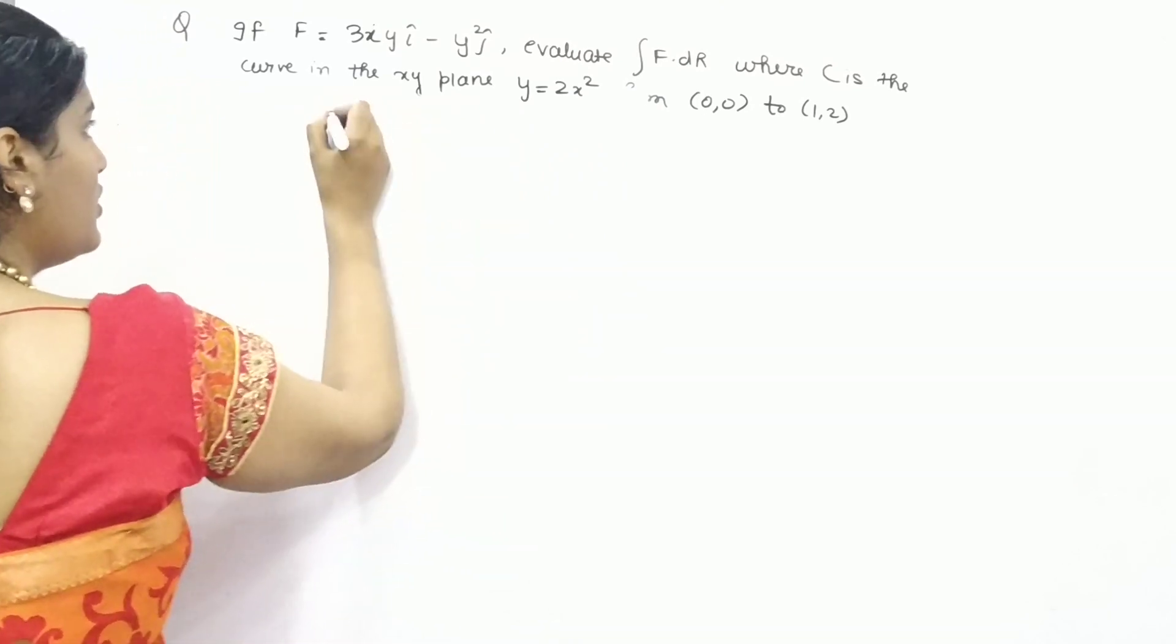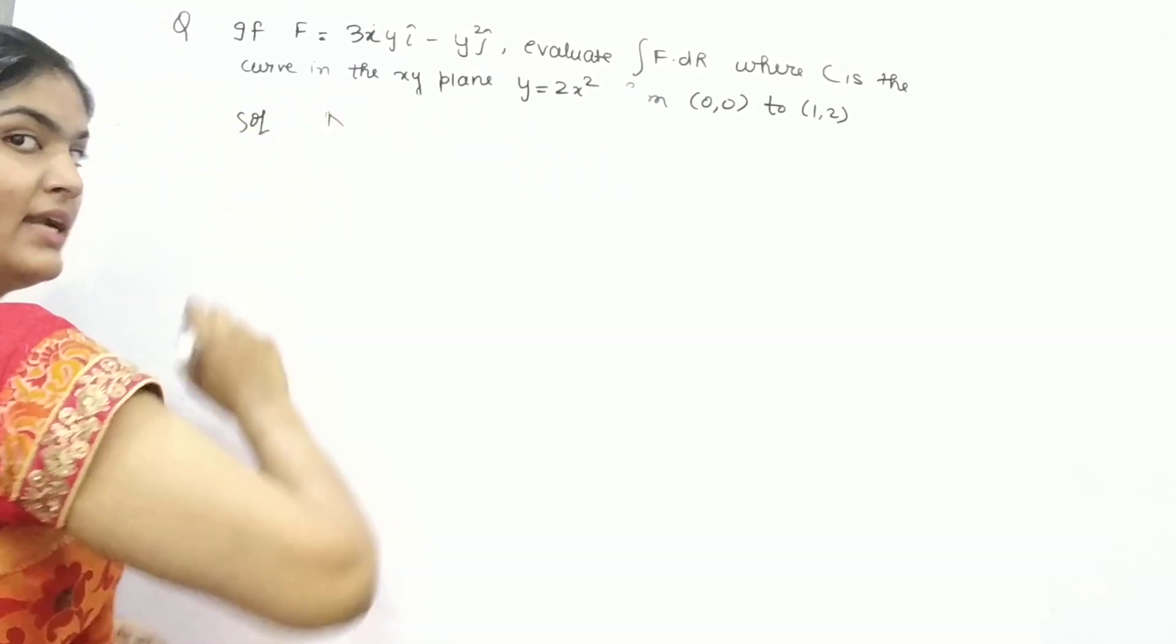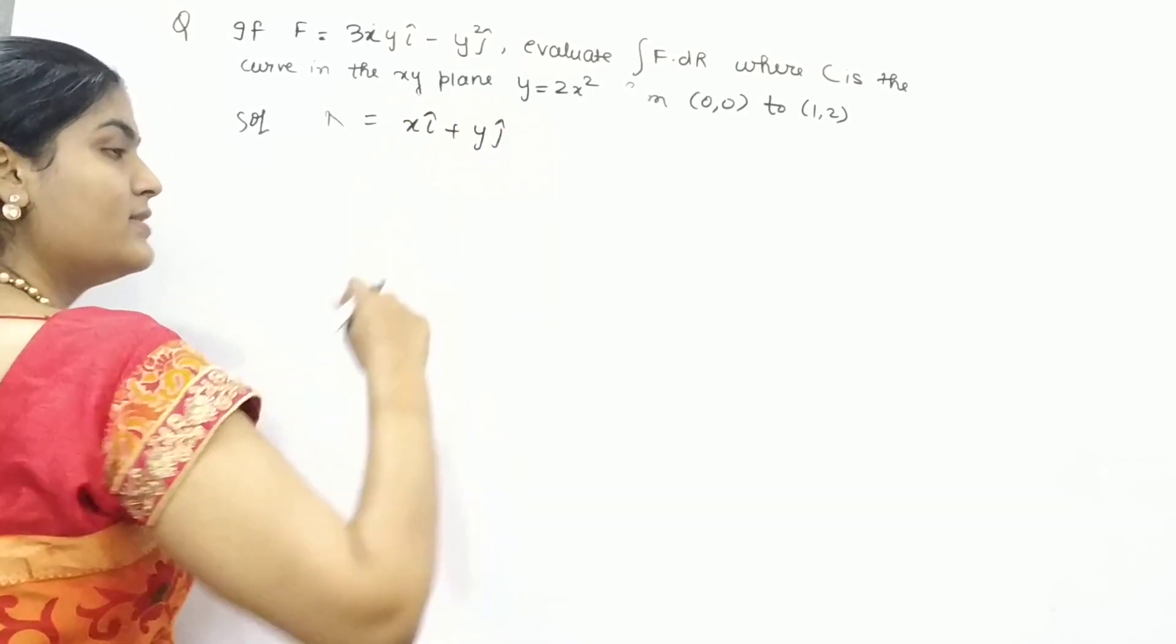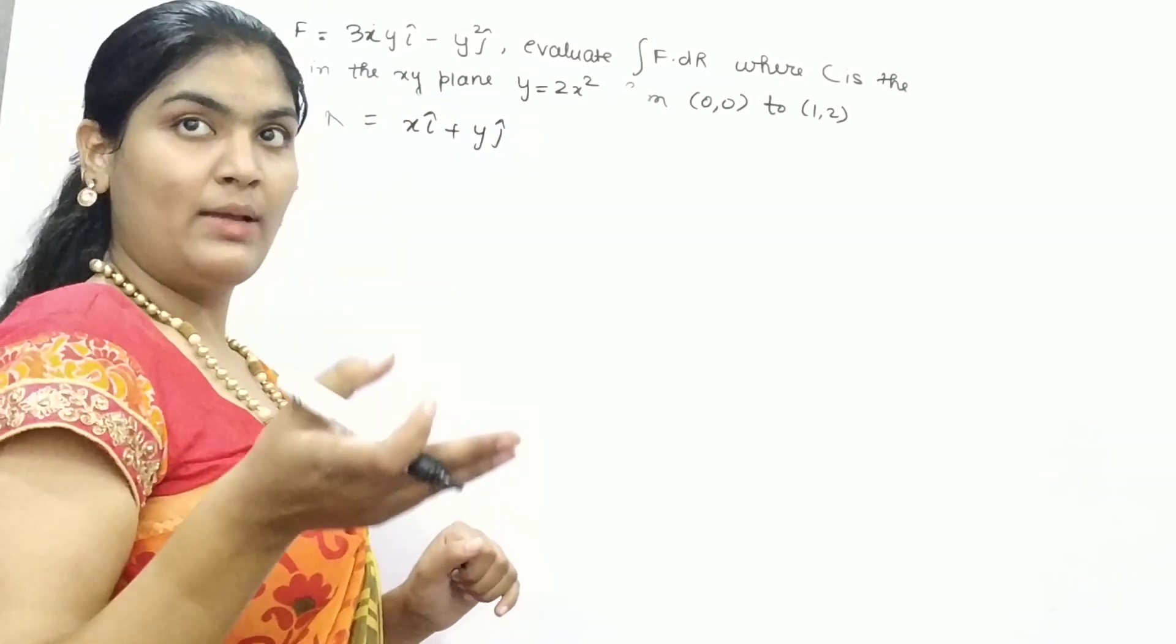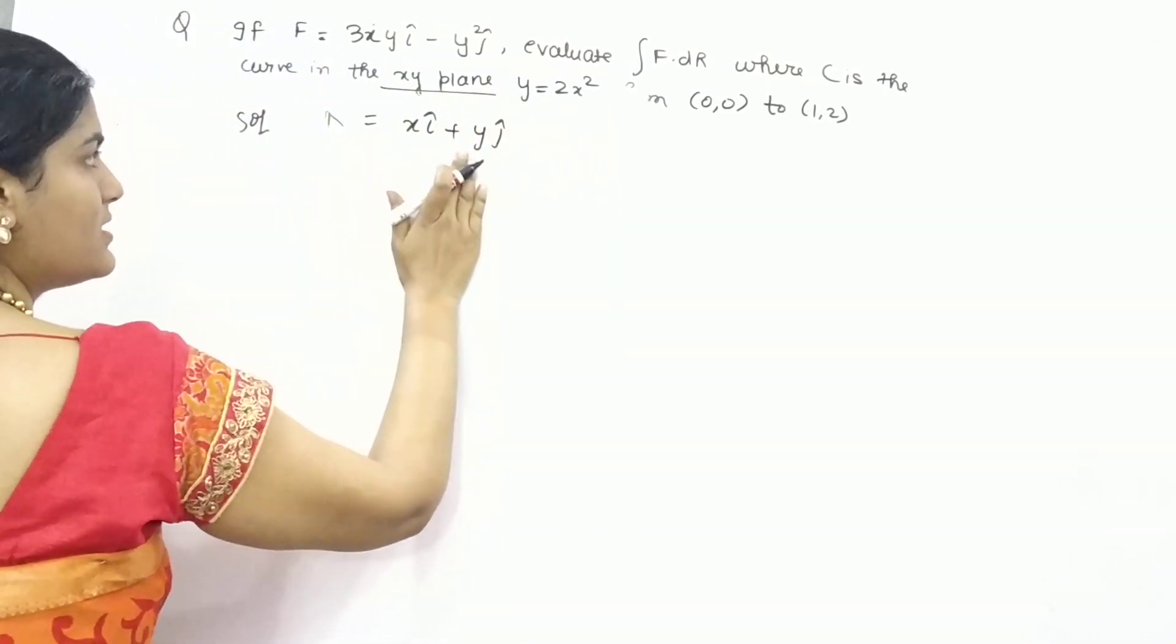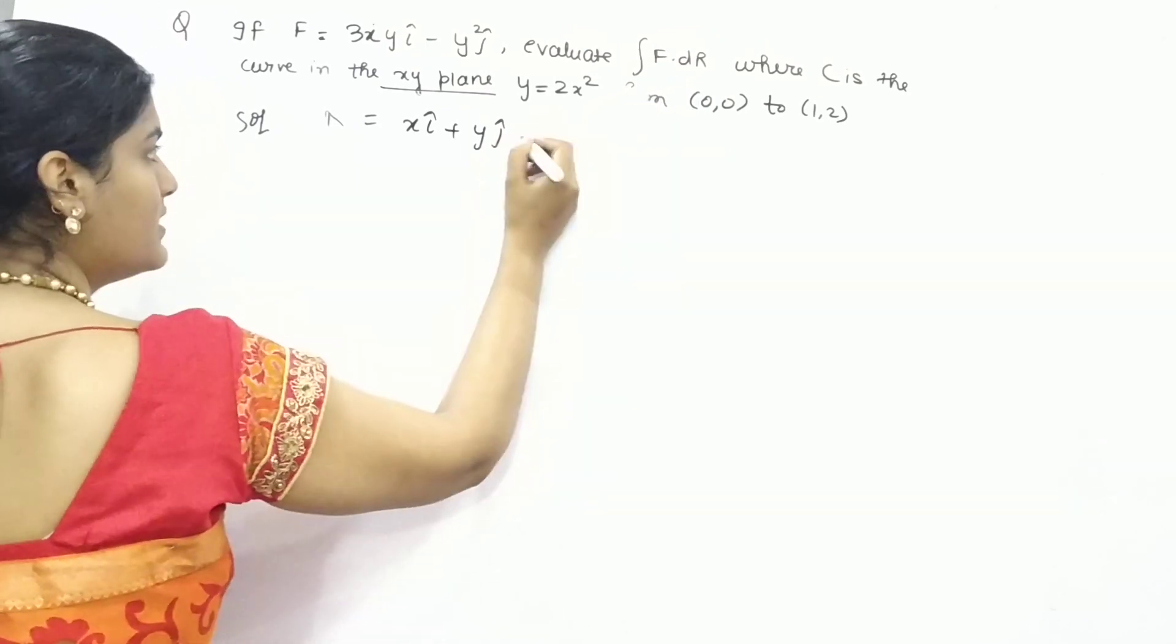What is dr? You know that the r is xi plus yj plus zk. Why I am not taking zk? Because it is xy plane. So this is your r. Now what you need to find out? dr.